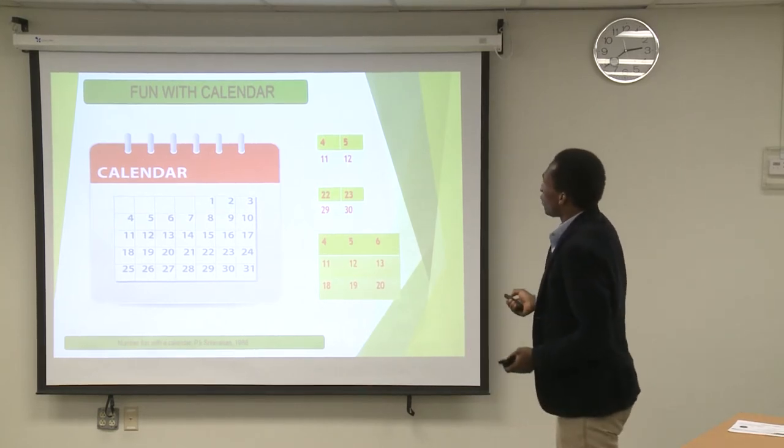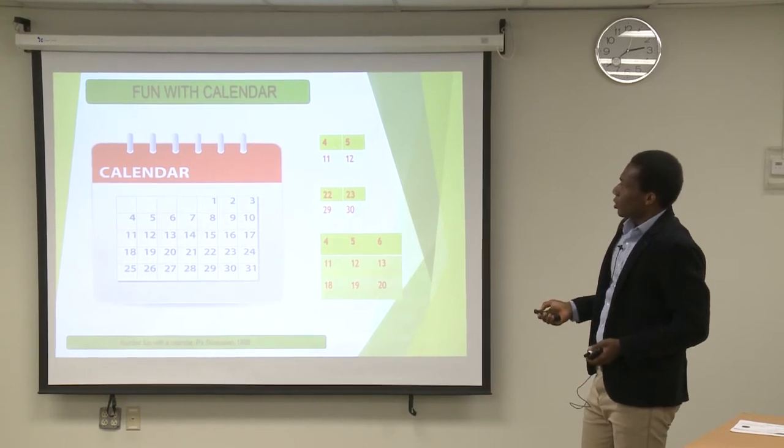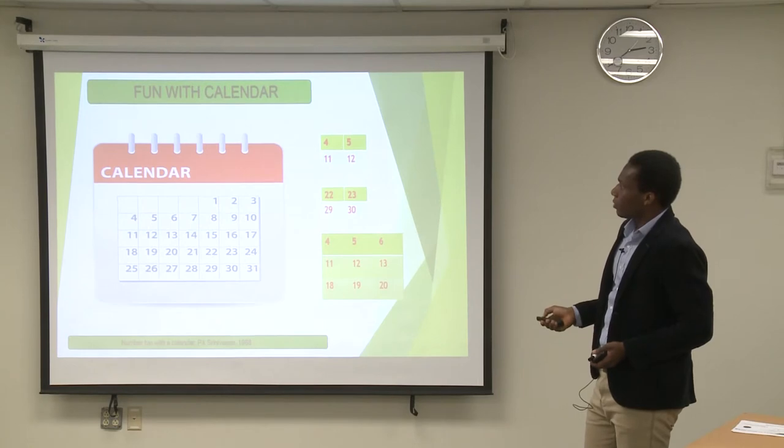So what we're to do is just take, for example, what we have here is like a 2x2 matrix. I pick this date from here: 4, 5, 11, 12.